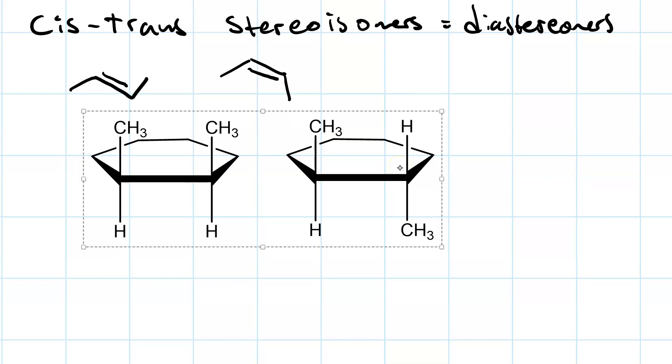So, this molecule is cis because both methyl groups are pointing up. And this molecule on the right is trans because one methyl group is pointing up and one methyl group is pointing down. So, these are diastereomers.